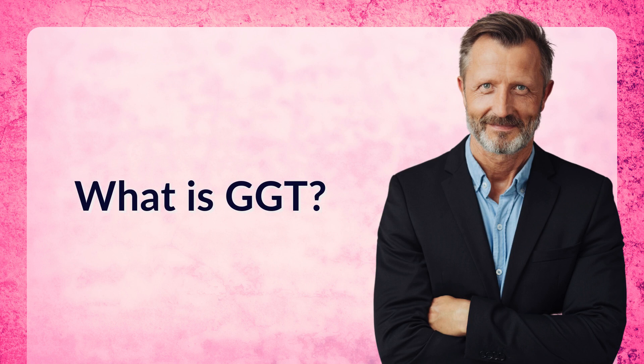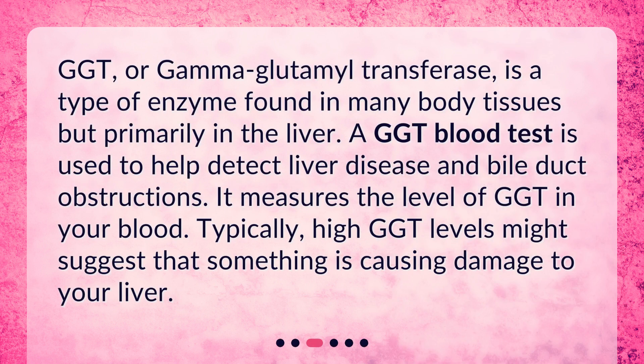GGT, or gamma glutamyl transferase, is a type of enzyme found in many body tissues but primarily in the liver. A GGT blood test is used to help detect liver disease and bile duct obstructions. It measures the level of GGT in your blood. Typically, high GGT levels might suggest that something is causing damage to your liver.